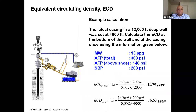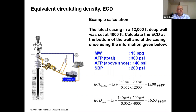The ECD equation in the context of MPD is: mud weight plus annular pressure loss plus surface back pressure, divided by the constant and true vertical depth. As an example, with a well bottom at 12,000 feet and the previous casing shoe at 4,000 feet, annular friction pressure above shoe is 140 PSI and total is 360 PSI. ECD at bottom is 15.9 PPG, while ECD at the casing shoe is 16.3 PPG — higher than at bottom. Hydraulic modeling software should calculate both, and one must ensure ECDs at the casing shoe do not exceed fracture pressure.